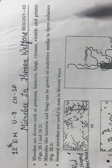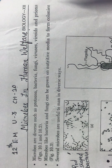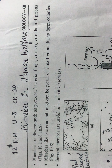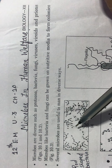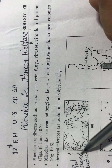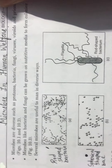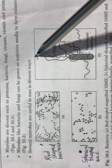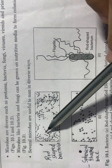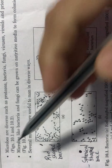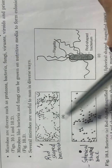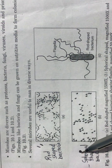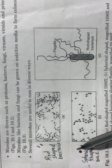These colonies look like beads — small bead-like structures. Here we have diagrams of certain bacteria. The microbes are useful to man in diverse ways. This is the diagram of rod-shaped bacteria — long rod-like structures. And here are spherical, round-shaped bacteria.